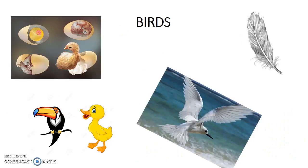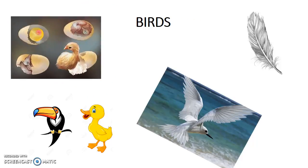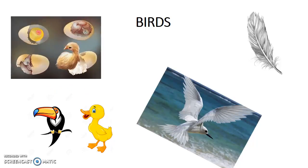Second, the birds. Birds are oviparous, which means that they reproduce by laying eggs. Birds haven't got teeth. They have beaks and wings. They breathe with their lungs, like mammals do. Nature makes their bones hollow, which is why they can fly.